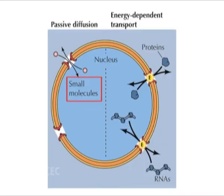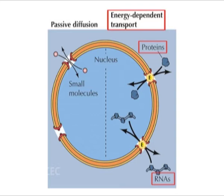The nuclear pore complex provides a channel for transport of substances between the nucleus and the cytoplasm. There are roughly 3,000 NPCs situated in the nuclear envelope. Smaller molecules less than 9 nanometers in diameter, like ions and metabolites, may freely diffuse through the NPC. Larger molecules between 9 and 28 nanometers in diameter must be actively transported through the NPC in a controlled process that is selective and energy dependent.